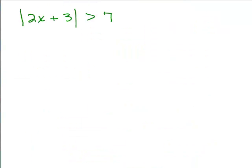All right, here is our next example. Absolute value of 2x plus 3 is greater than 7. Why don't you put the video on pause and see if you could do this one all on your own.